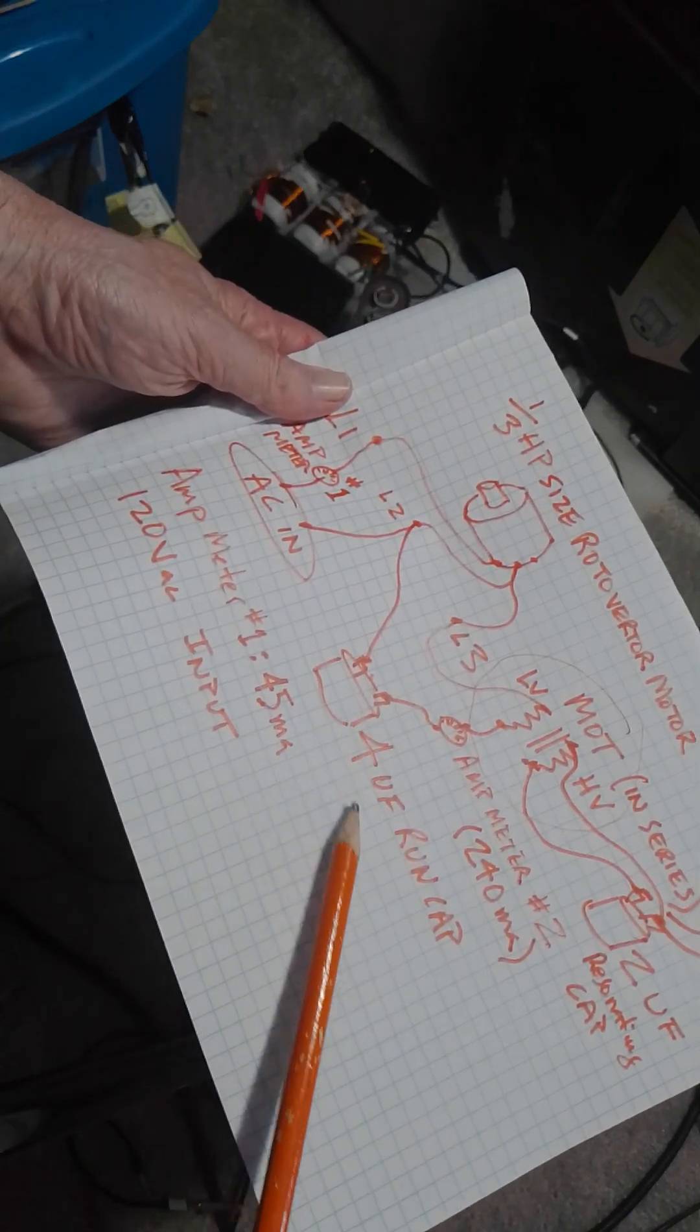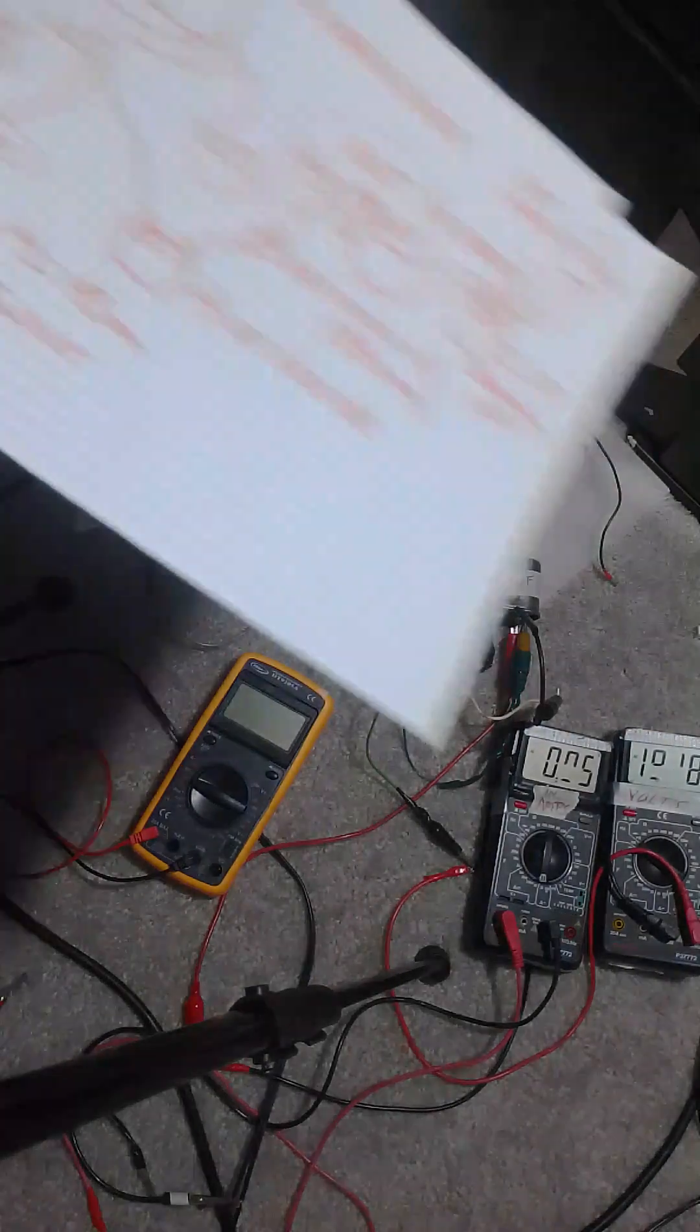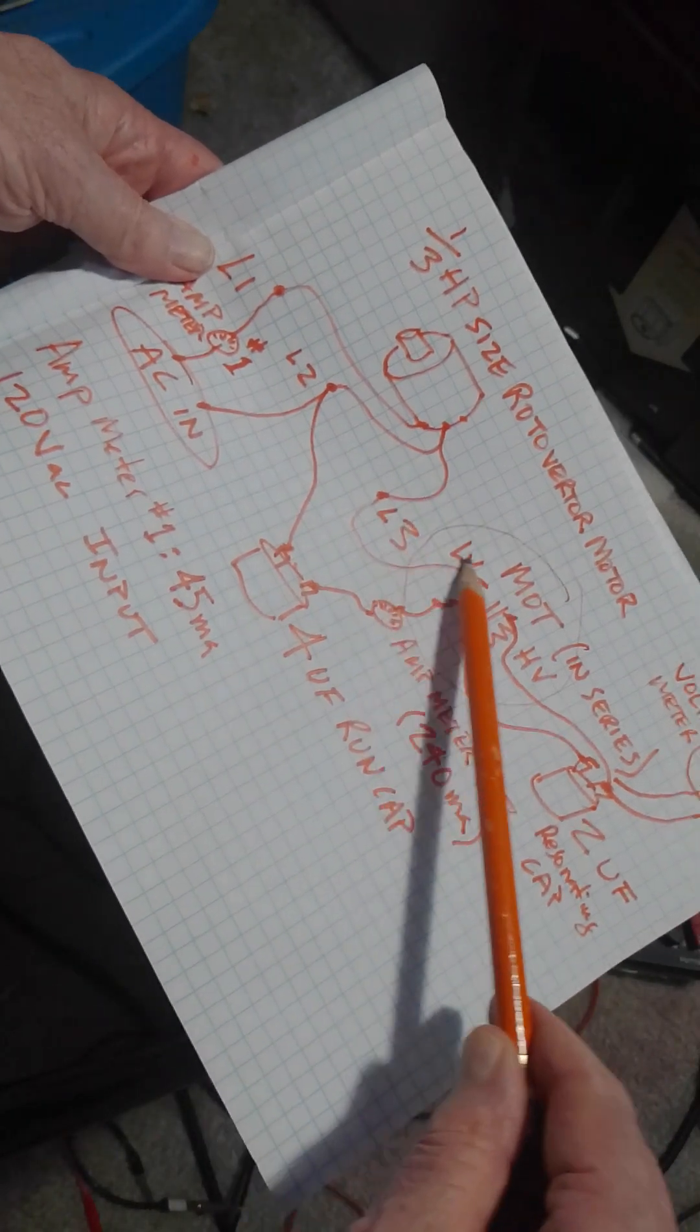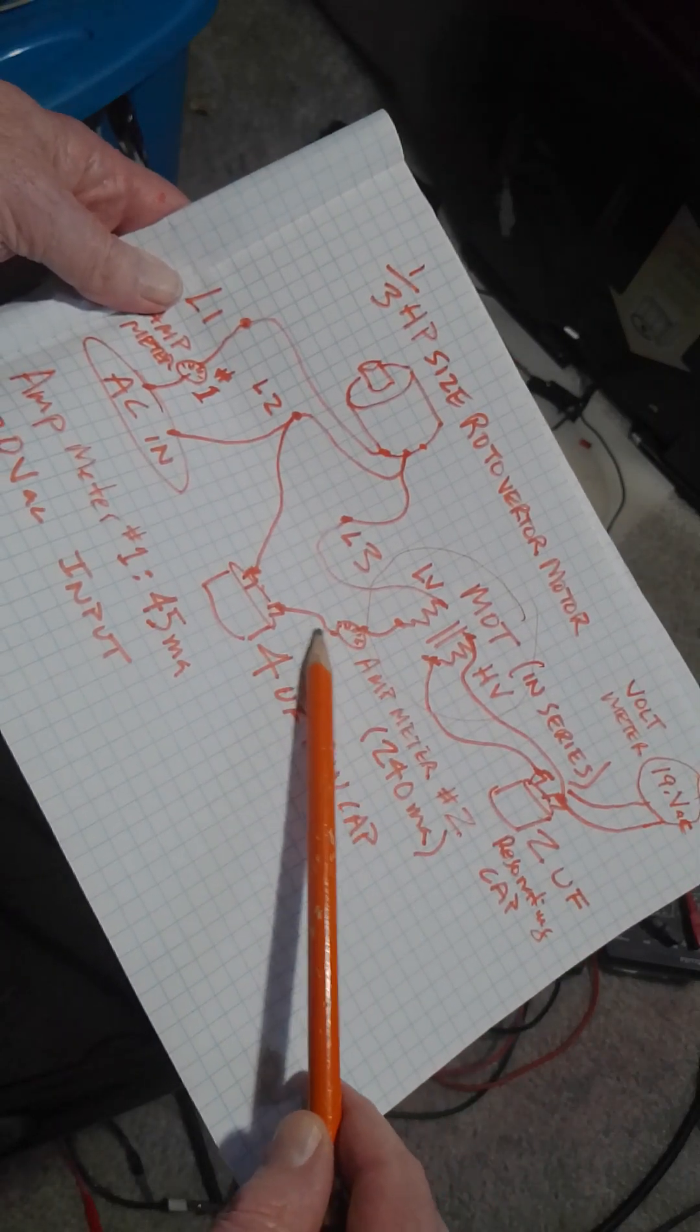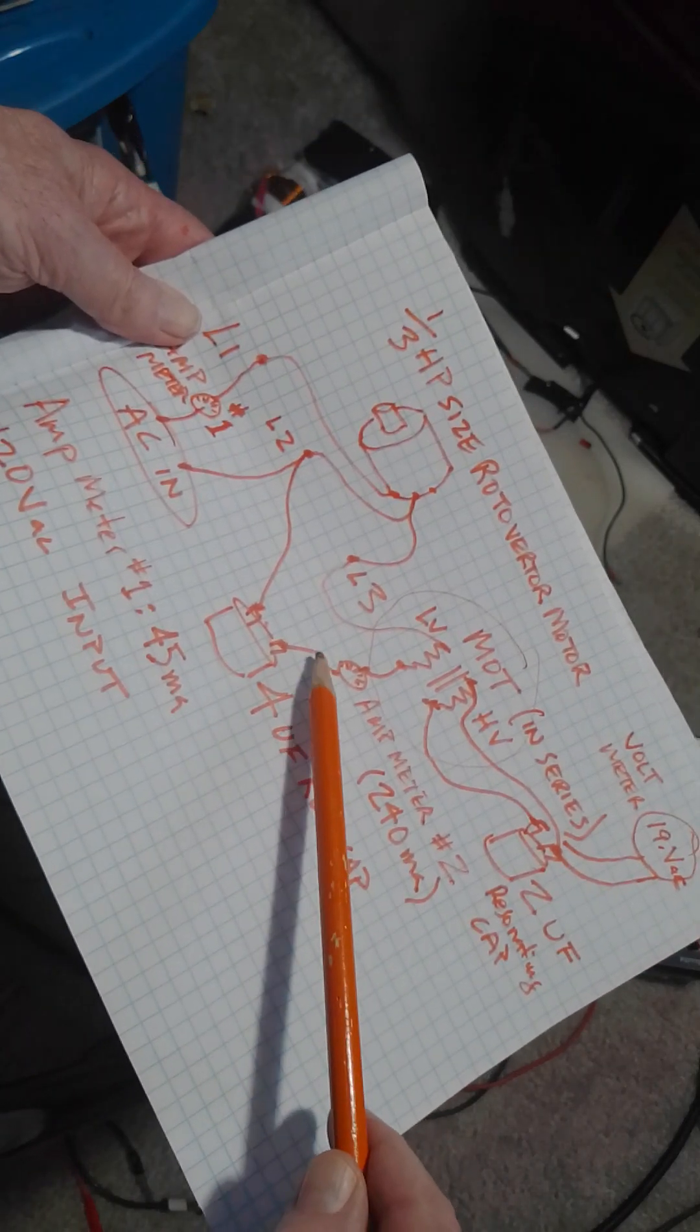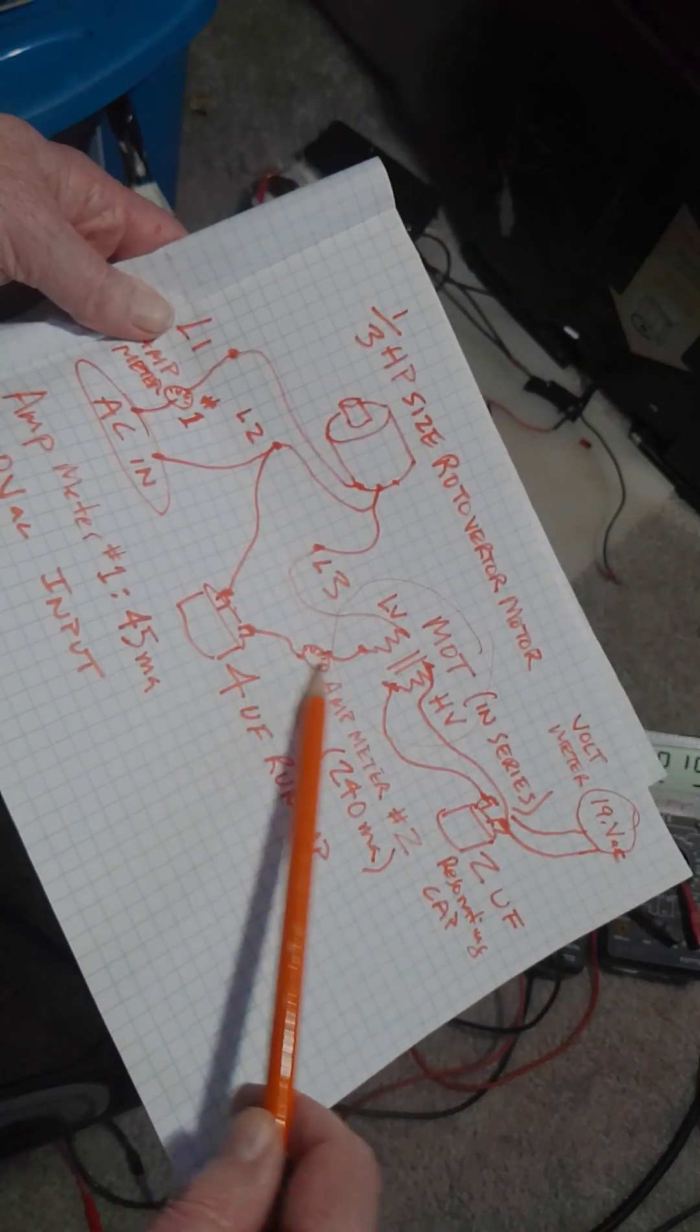Now the run cap is 4UF run cap. That's over here. And the L3 line goes in series to the low voltage side of a microwave oven transformer. And on EV Gray, Alex Gouldthorpe said you ought to try the high voltage side in series here.